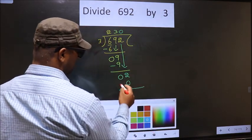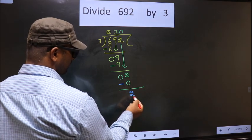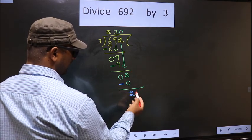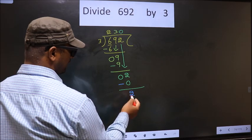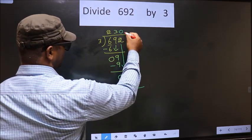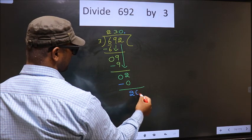Now, you subtract. 2 minus 0, 2. Over here, we did not bring any number down. And 2 is smaller than 3. So, now, you can put a dot and take 0 here.